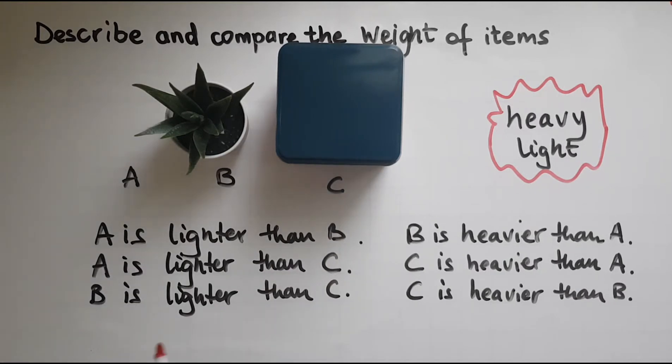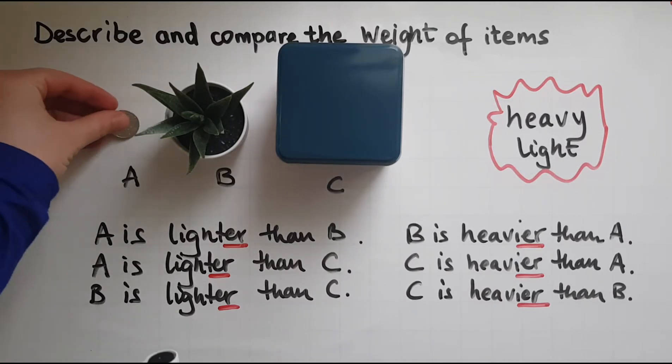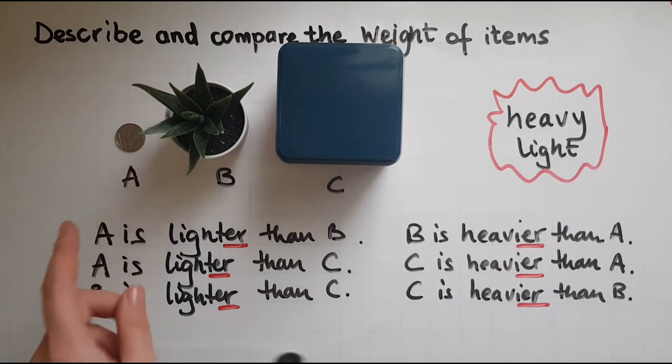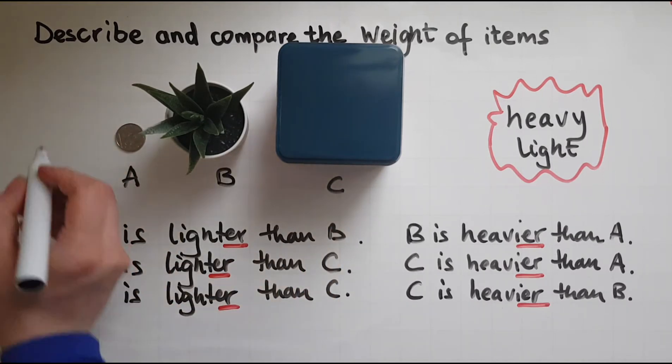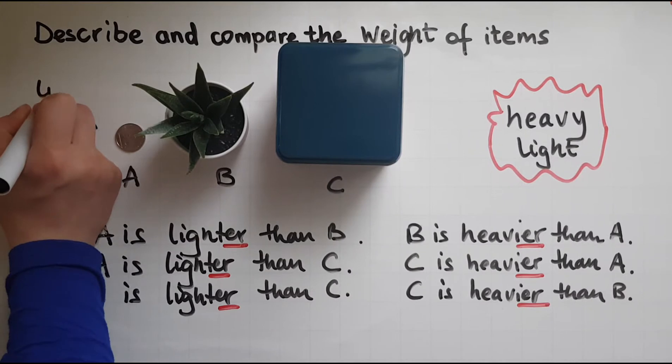So that -er at the end, and make sure you check the spelling as well. Whereas when I compare three items or more together, out of the three the coin is the lightest. So that -est at the end, the ending.